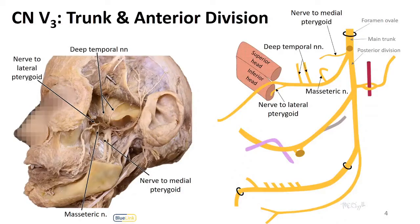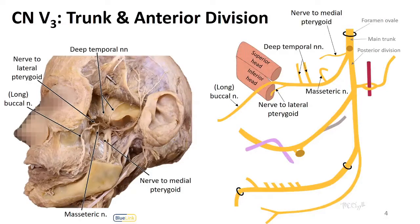After the lateral pterygoid is given off and after it passes through the lateral pterygoid muscle, then it changes its name to the buccal or the long buccal nerve. This is the only sensory branch of the anterior division. You might also see the nerve to lateral pterygoid coming off of buccal, so when the name change happens can vary depending on the source.